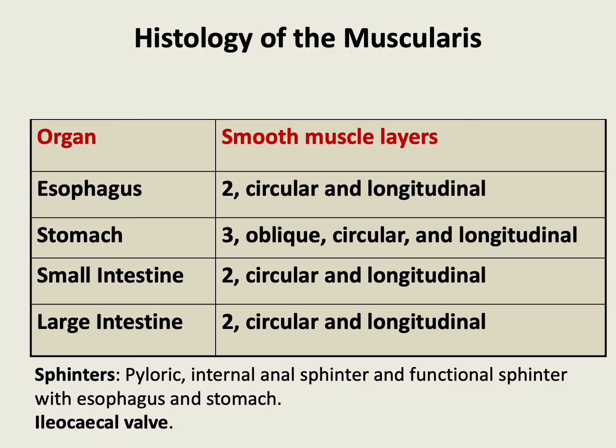Here we can see the general outline. In the esophagus, we have two layers — the inner circular and outer longitudinal. Whereas in the stomach, there are three layers: the innermost oblique, circular, and longitudinal. In the small intestine and the large intestine, we have two layers only — circular and longitudinal.